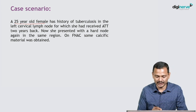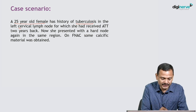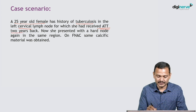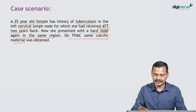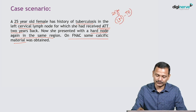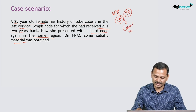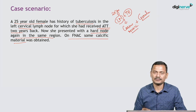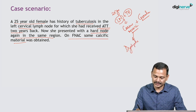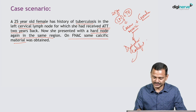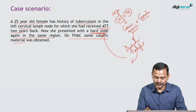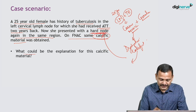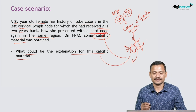Here is a 25-year-old female with a history of tuberculosis — specifically nodal tuberculosis. She was given ATT two years back. She now presents with a hard node again in the same region. On FNAC, some calcific material was obtained. Analyzing this: TB can have caseous necrosis — that is the identifying feature — plus granuloma. This caseous necrosis can undergo dystrophic calcification, which is responsible for the hard node. On FNAC, calcific material was found. So the explanation for this calcific material is dystrophic calcification, which we will discuss in detail subsequently.